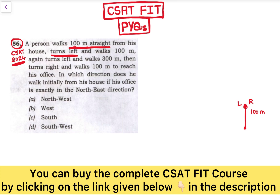To understand left and right: if you are facing a particular direction, your left hand is on one side and your right hand is on the other. So he turns left — towards this side — and walks 100 meters. Now he is here.